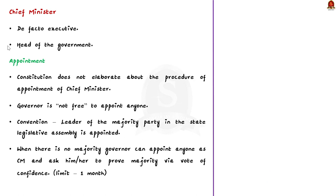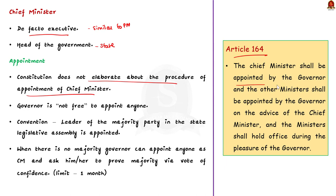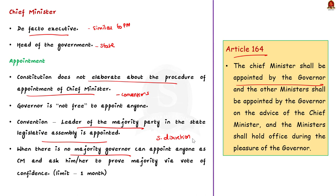The position of Chief Minister in state government is similar to the Prime Minister in the central government — the de facto executive and head of government in the state. The Constitution does not contain a specific procedure for appointment of the Chief Minister; Article 164(2) only mentions that the Chief Minister shall be appointed by the Governor. By convention of parliamentary democracy, the Governor appoints the leader of the majority party in the state legislative assembly as Chief Minister. When there is no clear majority, the Governor can use discretionary power and appoint the leader of the largest party or coalition, who must then prove majority within a month.